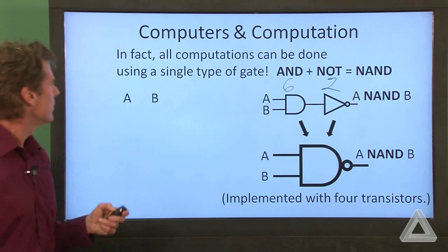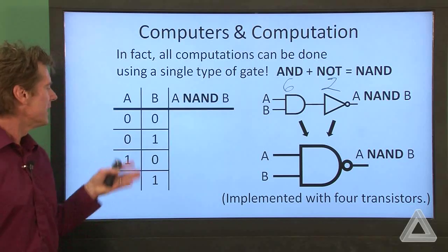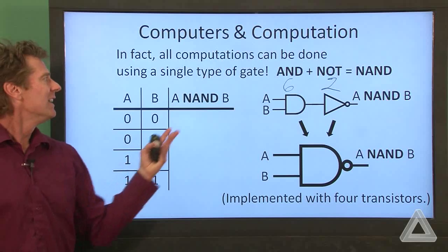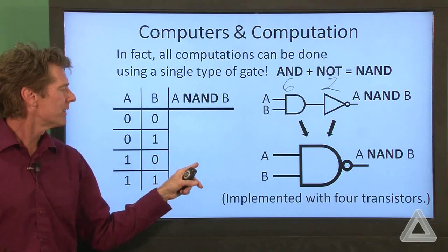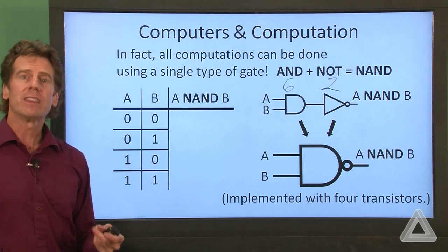And the truth table for this, here are the four combinations of input. Now we know the AND function was 0, 0, 0, 1. We just invert that.